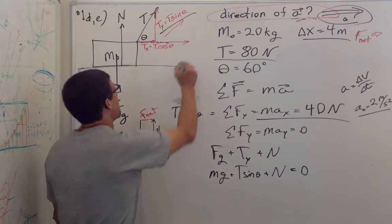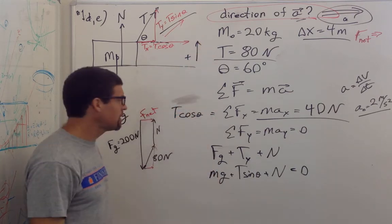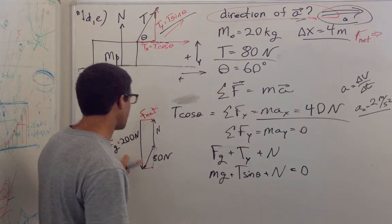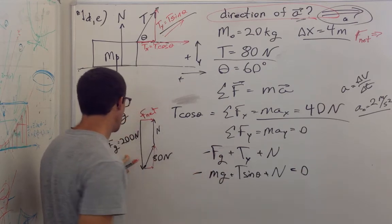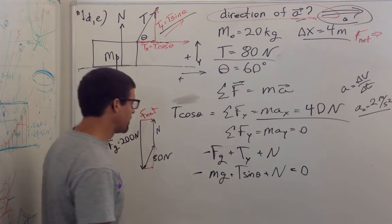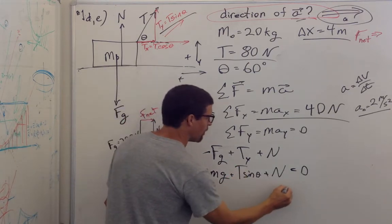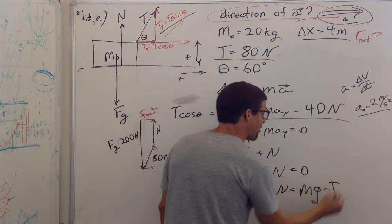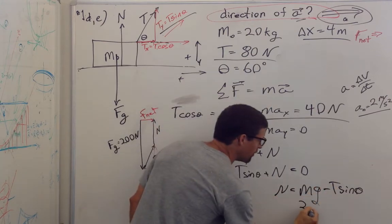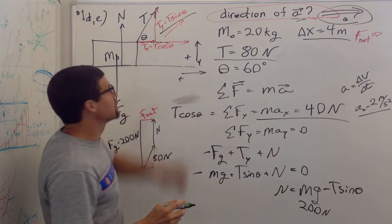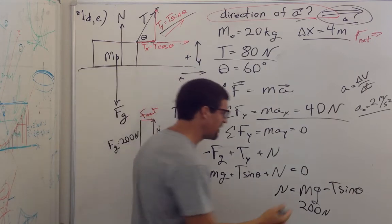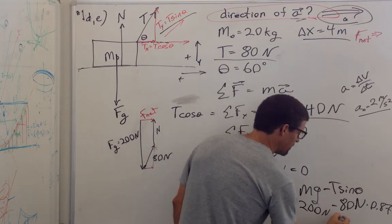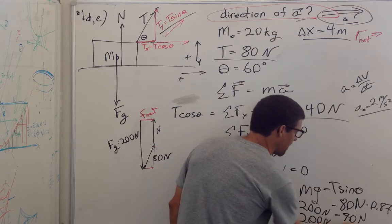I haven't accounted for the sign. I'm going to call up the positive y direction and right the positive x direction. Force of gravity is negative; the vertical tension and the normal force are in the positive direction. So the normal force equals mg minus tension sine theta. That's 200 newtons minus 80 newtons times sine of 60 degrees. Sine of 60 is 0.87, so 80 times 0.87 is about 70 newtons. 200 minus 70 gives the normal force.